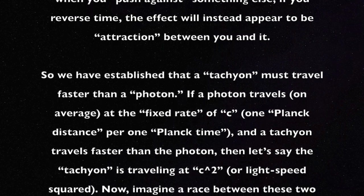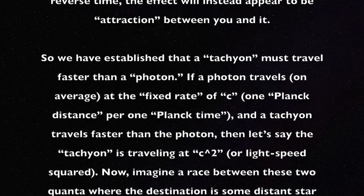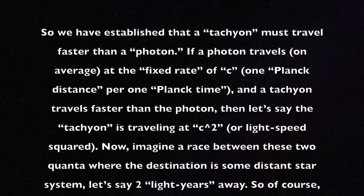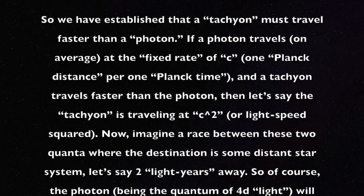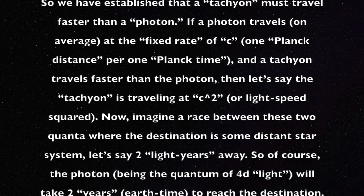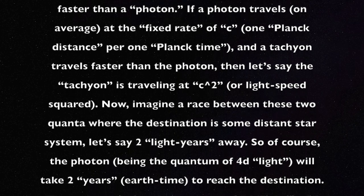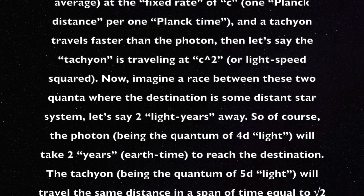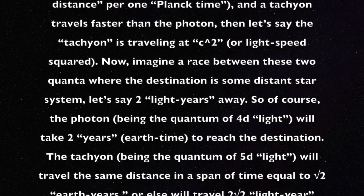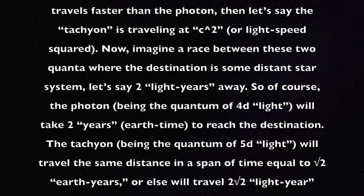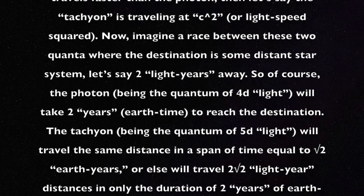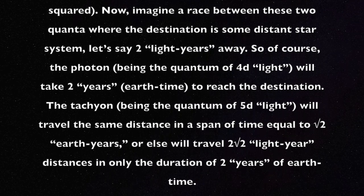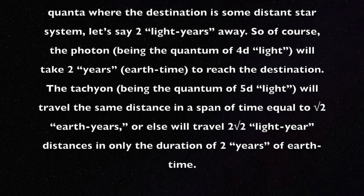We have established that a tachyon must travel faster than a photon. If a photon travels, on average, at the fixed rate of C — one Planck distance per one Planck time — and a tachyon travels faster than the photon, then let's say the tachyon is traveling at C squared, or light speed squared. Now, imagine a race between these two quanta, where the destination is some distant star system.